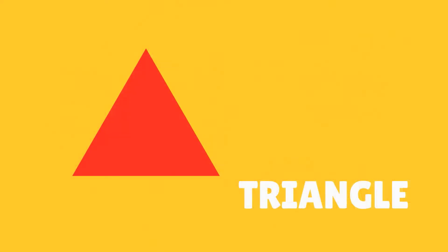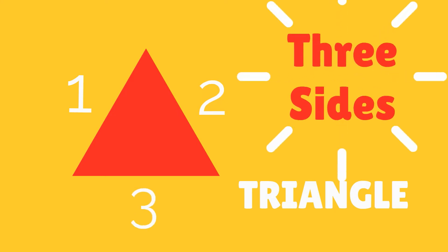How many sides does a triangle have? Let's find out: 1, 2, 3. A triangle has 3 sides.